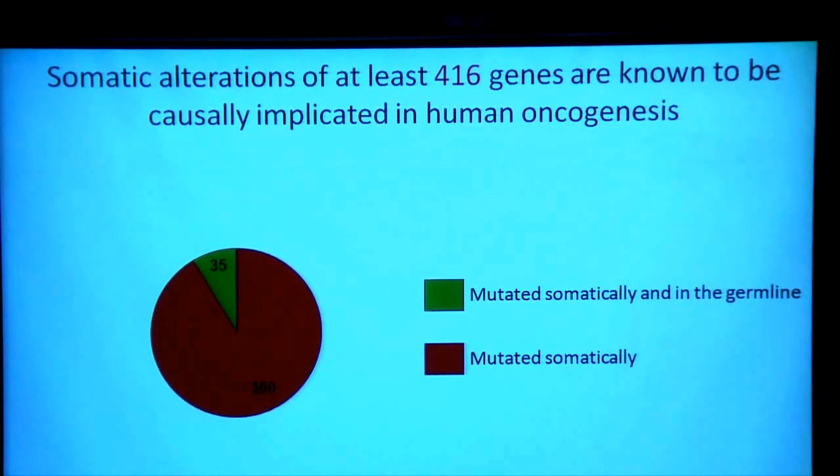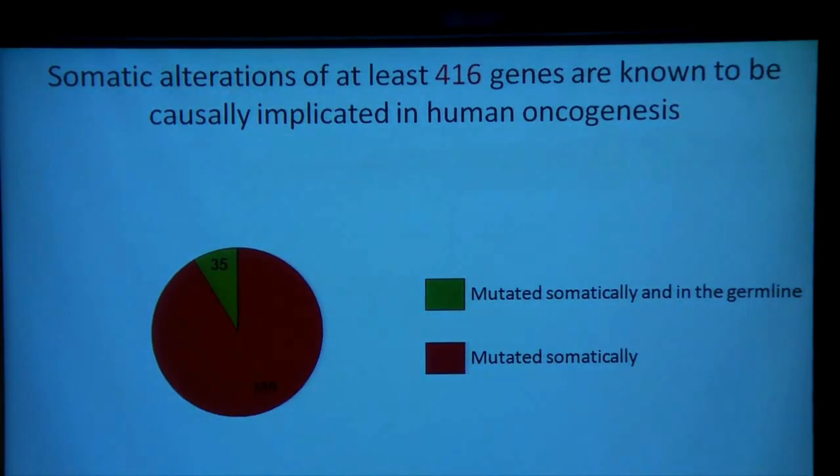400-odd genes. Most of those genes are, as far as we know, only mutated somatically to contribute to oncogenesis, and about 10% of them are mutated somatically and also in the germ line where they confer inherited predisposition to cancer. But the most interesting thing is that this number indicates that already more than 2% of the genes in the human genome, if mutated in the correct way, can contribute to the development of cancer.